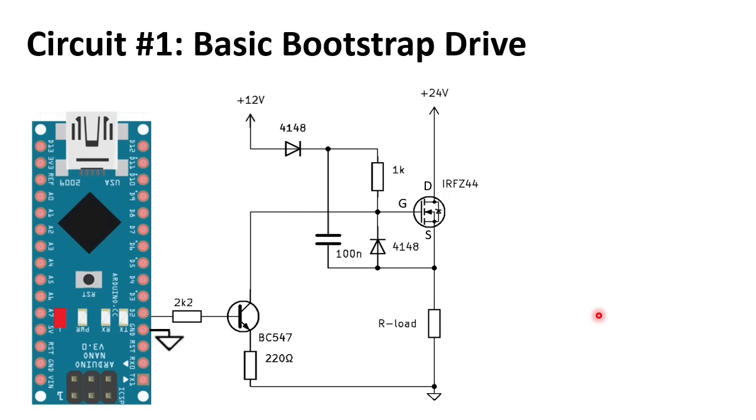The basic bootstrap drive. This circuit is the most simple and a good basis to explain how a bootstrap power supply works. Only one small NPN transistor, two diodes and a few resistors to drive a big power MOSFET with a floating source. The main trick here is the bootstrap circuit which creates a floating 12V power supply to drive the MOSFET. Let me explain.